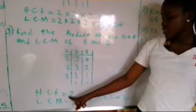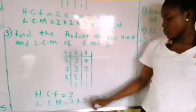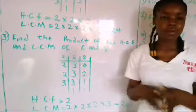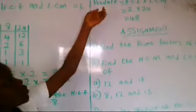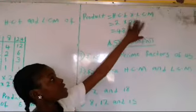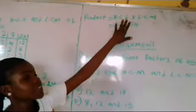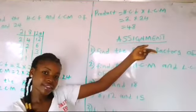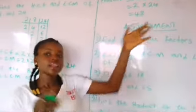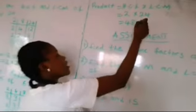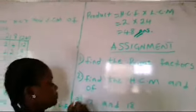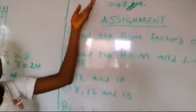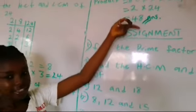Now the HCF and the LCM — 2 and 24 — are going to be multiplied together to get our final answer. That is the product of HCF and LCM: HCF times LCM. We have 2 times 24, which gives us 48. So that is our answer: 48.